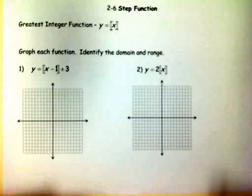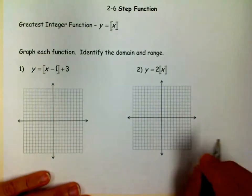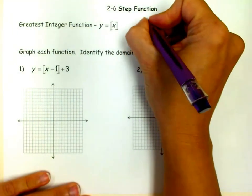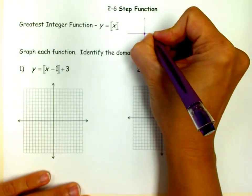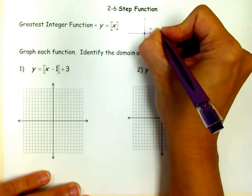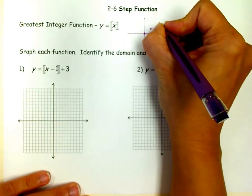Greetings, this is M squared, and we're going to graph some step functions. Sometimes they're called greatest integer functions, and it's important to know that the original function, the parent function, looks like this, where you have a kind of steps, step system going on.